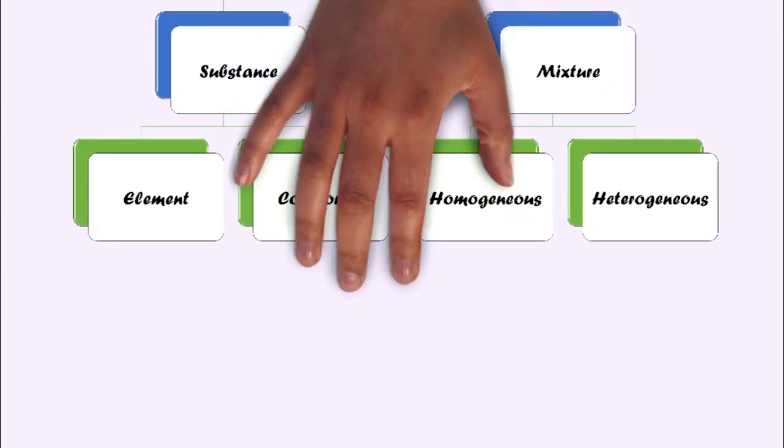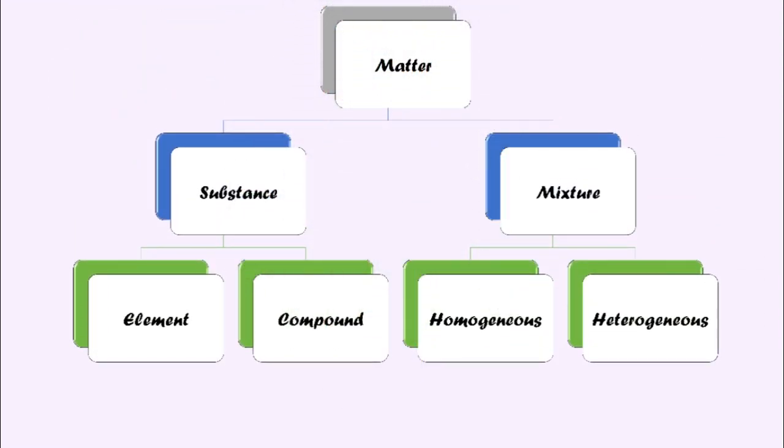On the composition, matter can be classified into substance and mixture. Matter with constant composition is called substance and matter with variable composition is called mixture. A substance can be an element or compound.